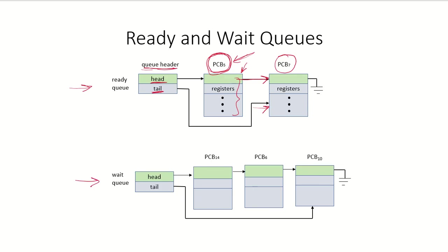Similarly, we can have a wait queue, and a wait queue exists for each input/output device. Again, there is a head pointer pointing to the PCB of the first process in the queue, with each PCB having a pointer to the next process, and a tail pointer pointing to the last process. As you can see, the queues are implemented as a linked list, though you can choose any other data structure representation.